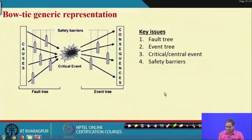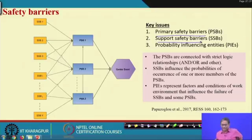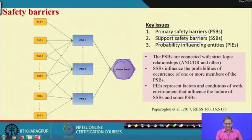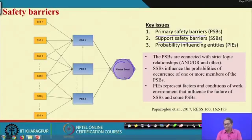Barriers will be of two types: one will be primary safety barrier (PSB) and another will be support safety barrier (SSB). Primary safety barriers are directly related to the center event. If you dig down using AND/OR logic gates you will find out some events that are ultimately causing the center event. Those events are nothing but failure of some barriers - these are primary safety barriers.